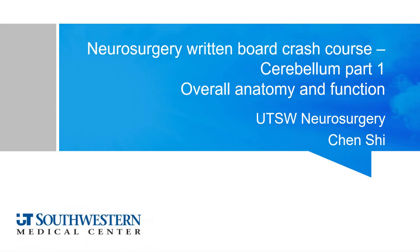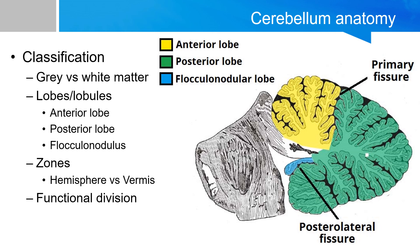Hello and welcome to Neurosurgery Rittenberg Crash Course. Today we'll be talking about the overall anatomy and function of the cerebellum. The cerebellum is often known as the little brain, and just like its cerebrum counterpart, it also has gray and white matter, with gray matter on the surface and white matter deep to it. The cerebellum is tightly folded, forming the cerebellar cortex on the outside. The white matter is located underneath the cerebellar cortex, and similarly to the cerebrum with its deep nuclei called basal ganglia, embedded in the white matter of the cerebellum are the four deep cerebellar nuclei.